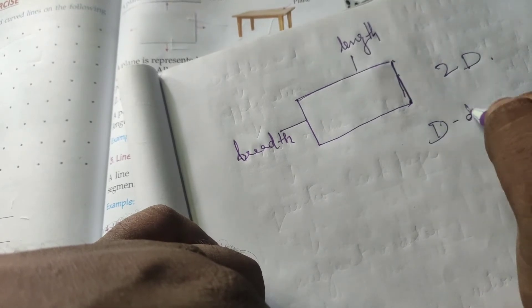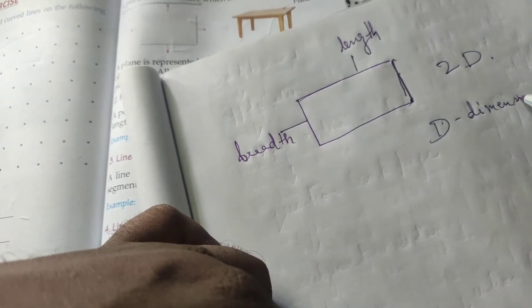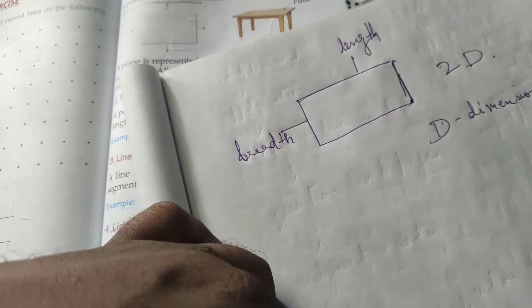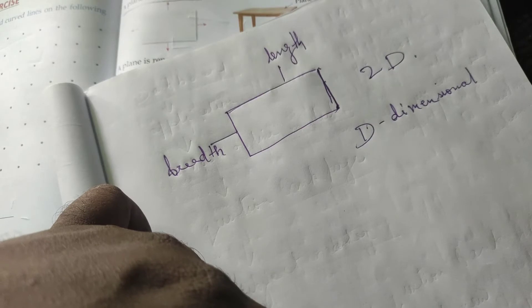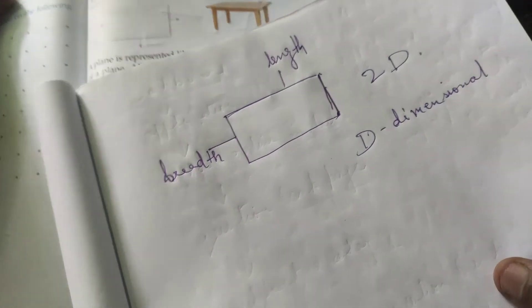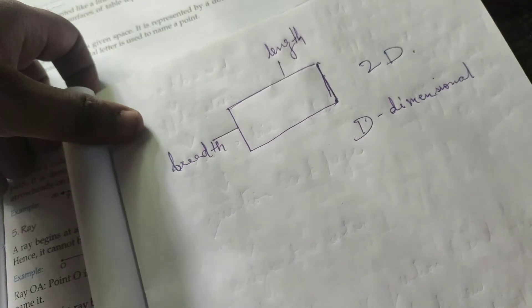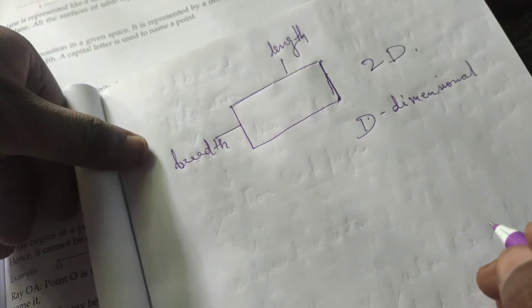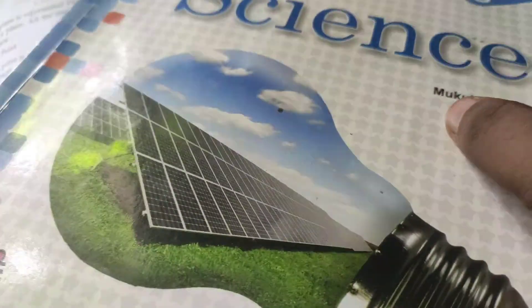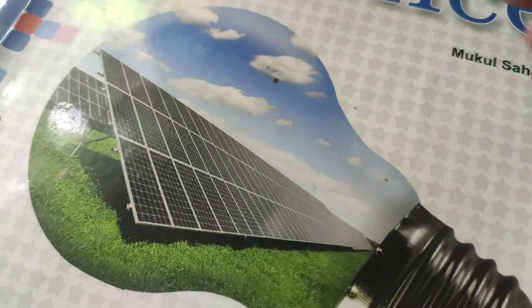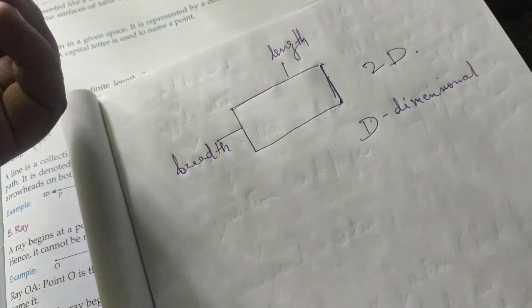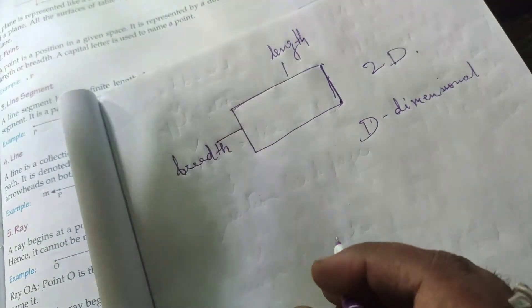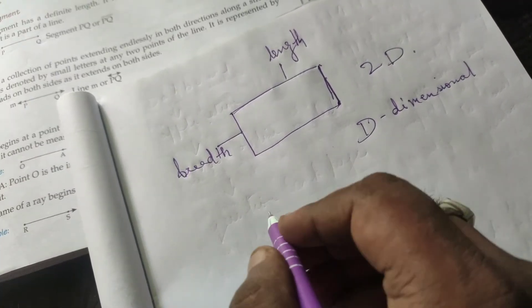So a plane is a two-dimensional flat surface which extends endlessly in all directions. Always remember that a plane is a flat surface. For example, this book — see, it is flat. So we can say this book represents a plane.